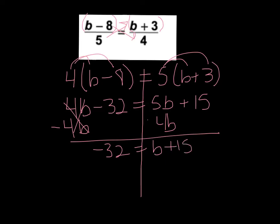And then I want to isolate the b. Remember, get the b by itself. So I'm going to subtract 15 from both sides. Those cancel. So I'm left with b equals negative 32 minus 15, which is negative 47.